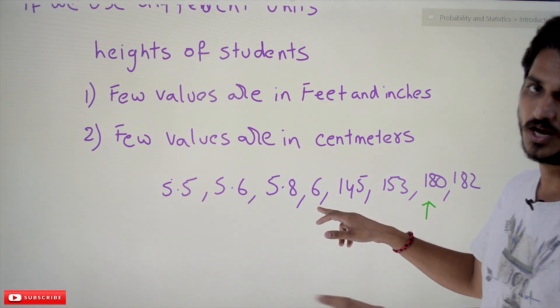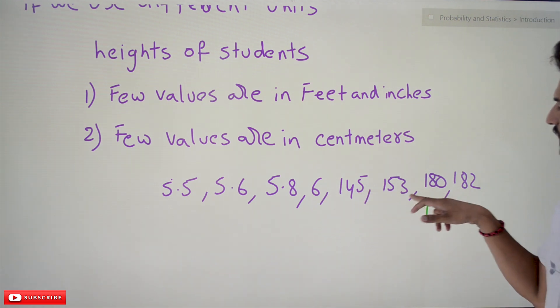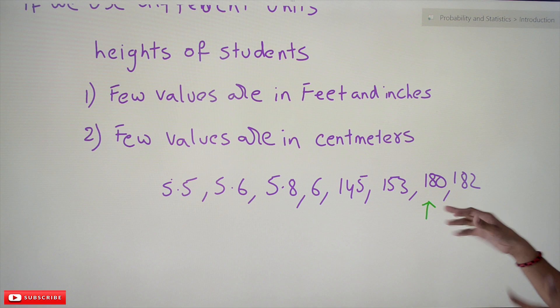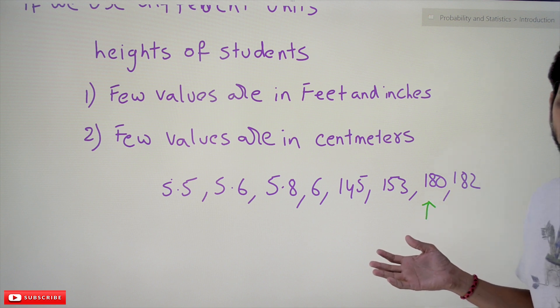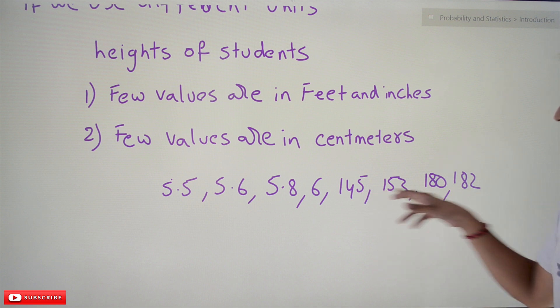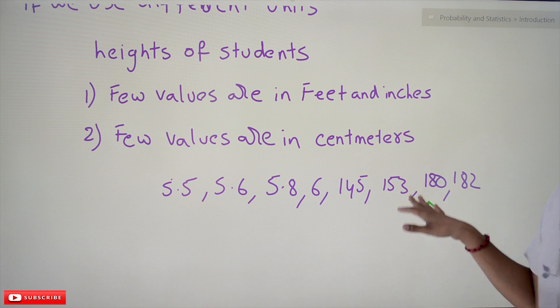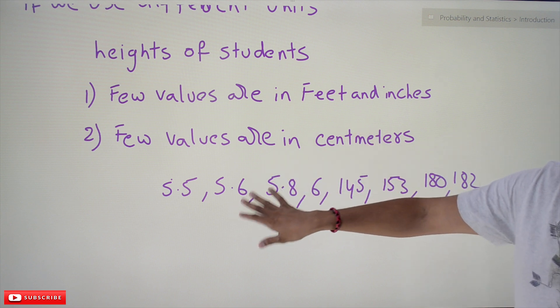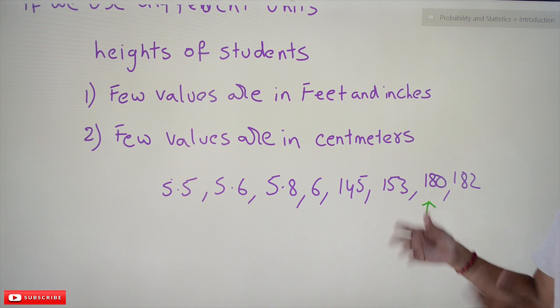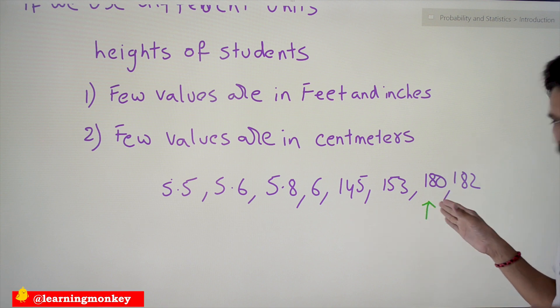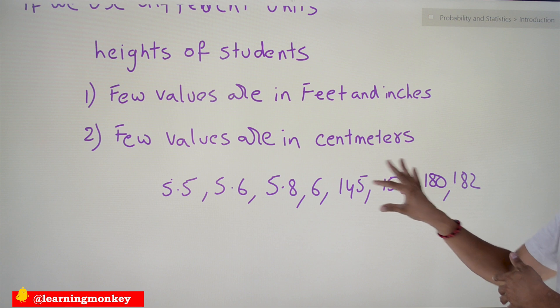If you take them in centimeters, if you take them in feet and inches—see there, if you calculate the mean, the mean will come somewhere around here. These big values are affecting the mean. It is always trying to pull the mean value towards these big values.